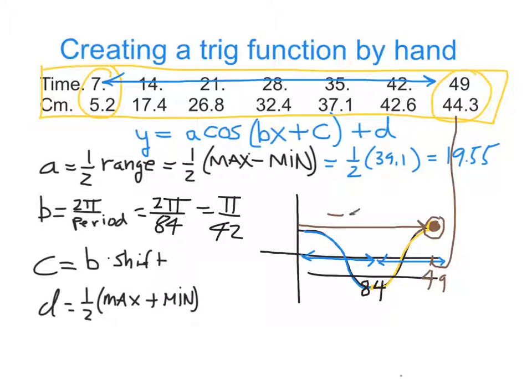So this cosine curve has shifted over 49 spaces to the right, which is considered a negative shift of 49. So to complete the calculation of C, it would be the value from B that we just got times negative 49. If you simplify that, that reduces to negative 7 sixths π.